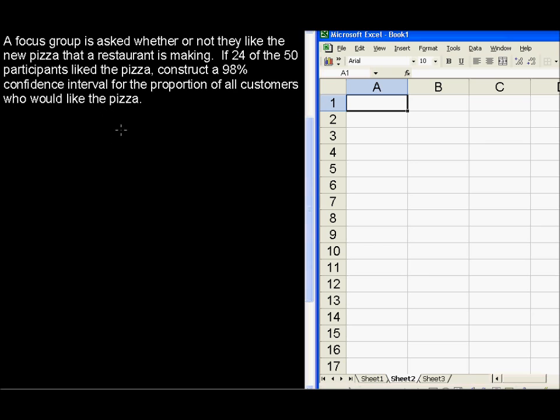So we have a sample of 50 people out of the population of all of the customers, and we're going to build a confidence interval that is our best guess for what is the true proportion of all the customers who would like that pizza. And that confidence interval works like this. You've got the p-hat, that is the estimate, that's the point estimate.